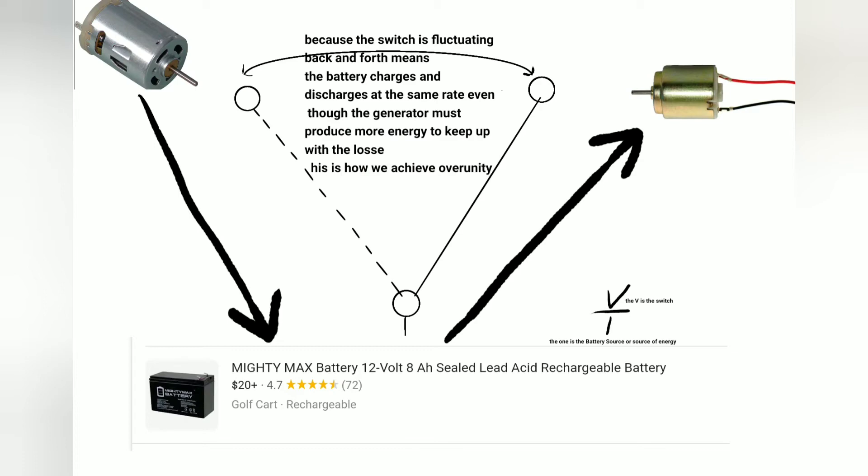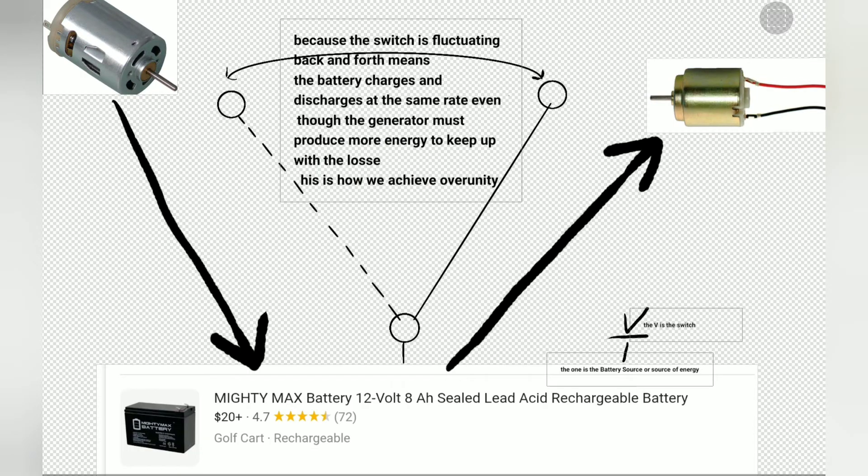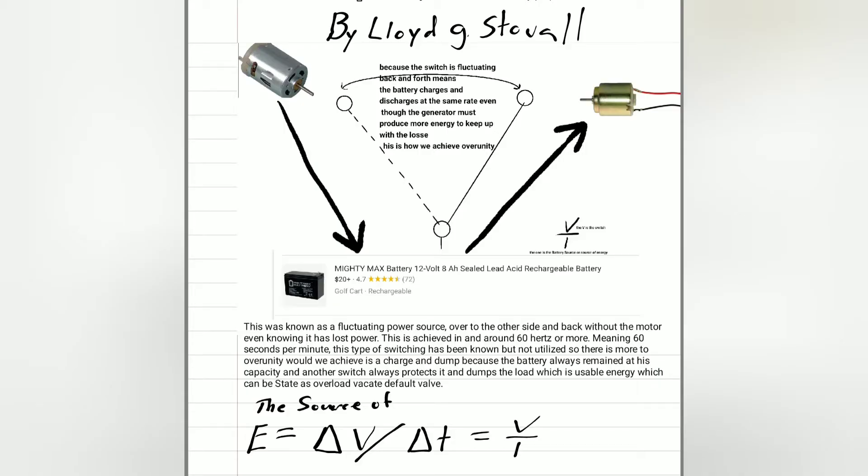Here's the diagram that shows you the dark line to the motor. And then when you make the switch, it goes to the generator to the battery. That's where you put the reed switch or a switch of any kind.